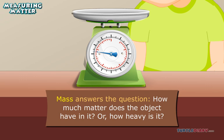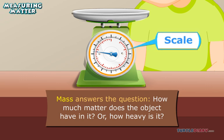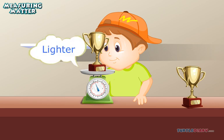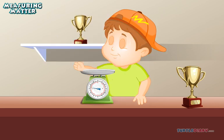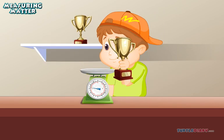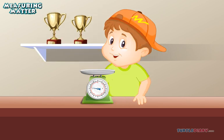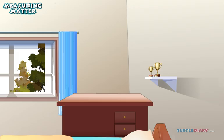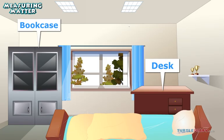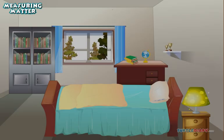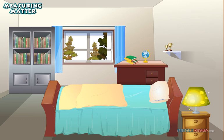For this, we use a scale to measure the mass of an object. We can take the lighter objects and put them on Matt's shelf — they have less mass, so they can go up there. We can take the heavier objects and arrange them on Matt's desk, bookcase, or nightstand. They have too much mass to go on the shelf.